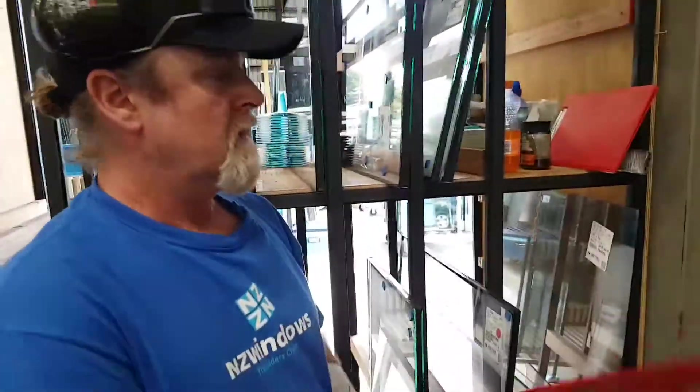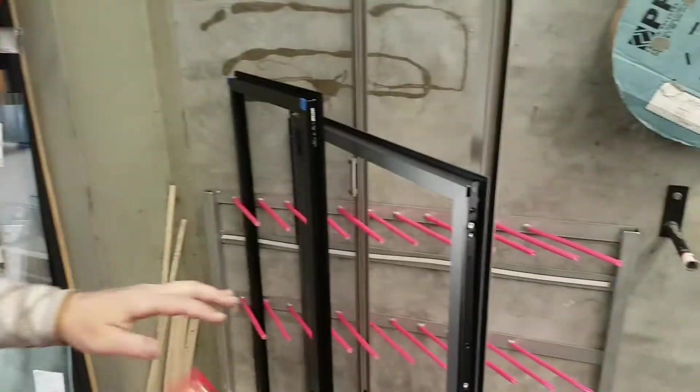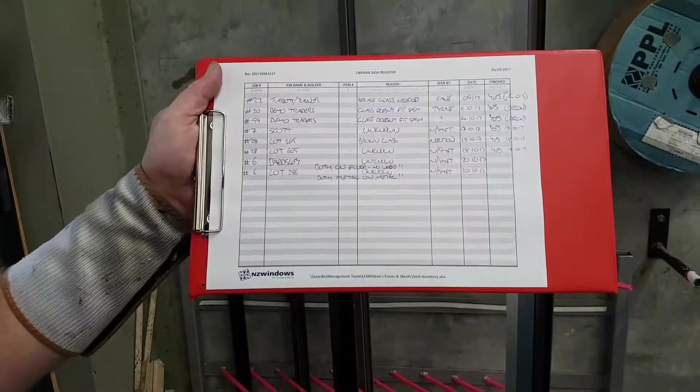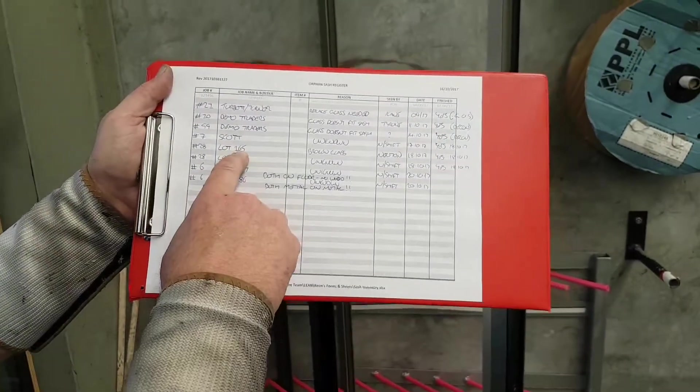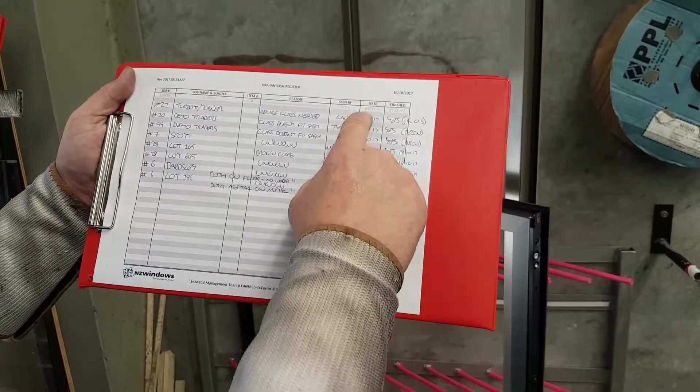We're back again for the third sash register. The sashes are nice and tidy now, and we have a list of the job number, the job name, the reason why it's there, who put it there, and when it was put there.